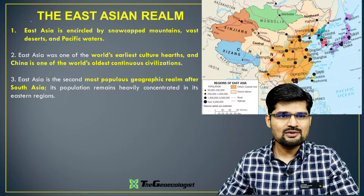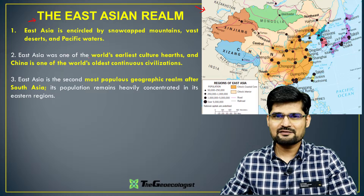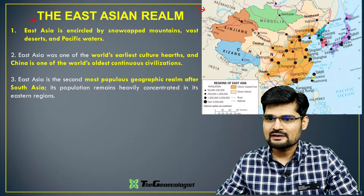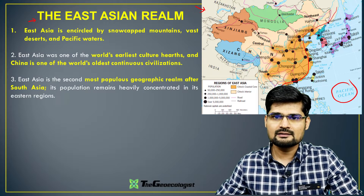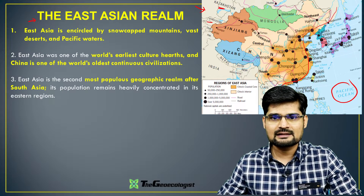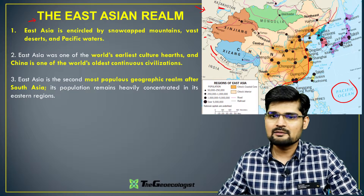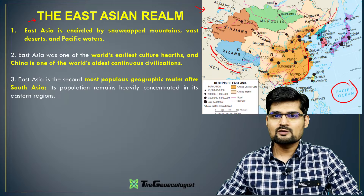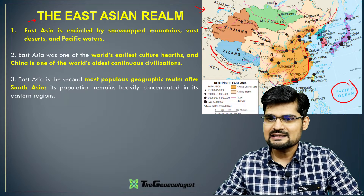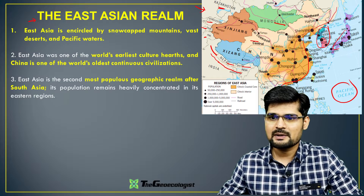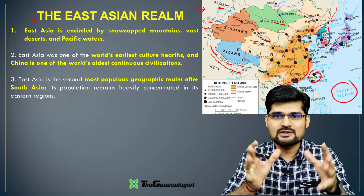Let's discuss about the East Asian realm. If you can see clearly in the map, this is the area we are talking about, lying on the Pacific Ocean coast. Bordering neighboring countries include Kazakhstan, Kyrgyzstan, Pakistan, India, Nepal, and Bhutan. Within this region, you have China, Mongolia, North Korea, South Korea, Japan, and also Taiwan.